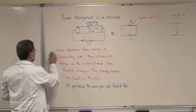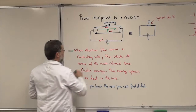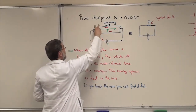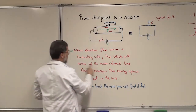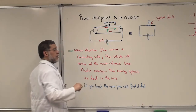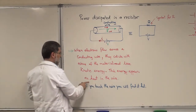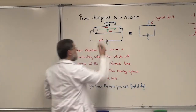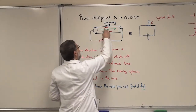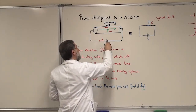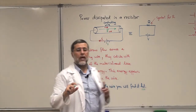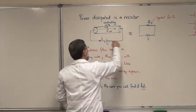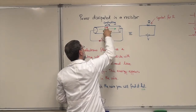When electrons flow across the conducting wire, they collide with the atoms. The atoms are big and the electrons are very small. They collide with the atoms of the material and lose kinetic energy. This energy appears as heat in the wire. If you touch the wire with your hands, you find that it is hot. So when they lose energy, they come to the battery and take energy from there.